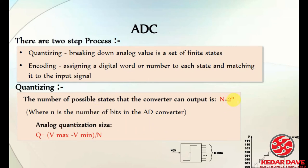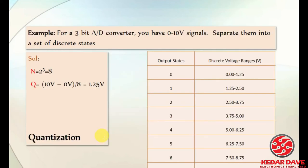If we have a 3-bit ADC, then N = 8. Here you can see quantization done from 0 to 7. This is a 3-bit ADC example. We have 0 to 10 volts and we need to represent these 10 volts by different means. This is how quantization can be designed.